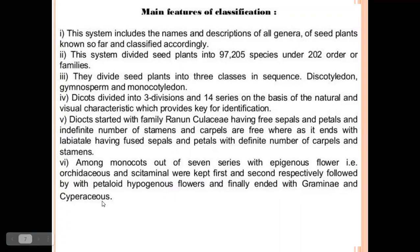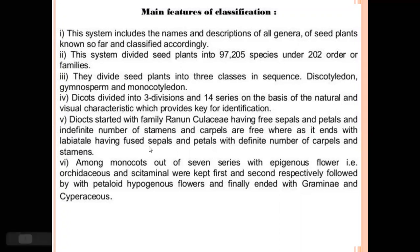These are the main features of Bentham and Hooker's classification. The system divided seed plants into 97,205 species under 202 families and orders, and into three major classes: dicotyledons, gymnosperms, and monocotyledons. The dicots are divided into three divisions and 14 series based on natural and visual characters. Dicots start with Ranunculaceae and end with Labiatae. Ranunculaceae has free sepals and petals and an indefinite number of free stamens and carpels.